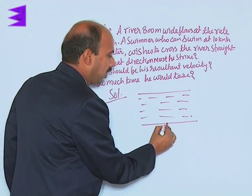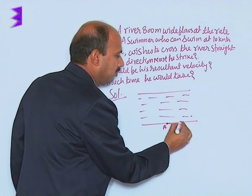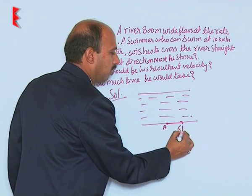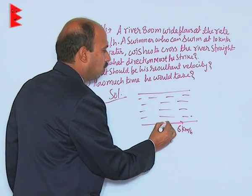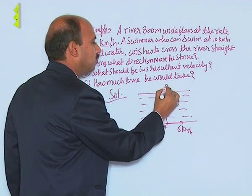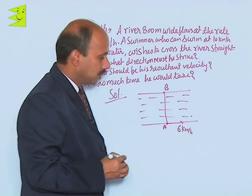See here that is 6 kilometer per hour. So, this point I have chosen A and the river is flowing to this side with the speed of 6 kilometer per hour. He has to go to cross straight, it means he has to reach the point B.